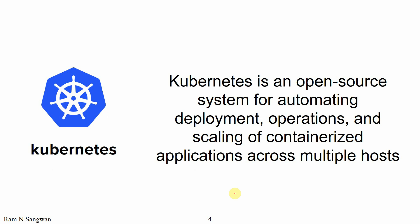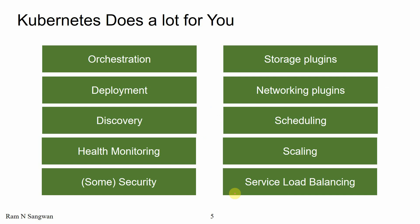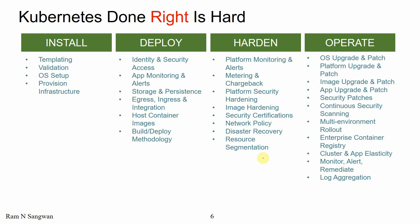Kubernetes is like an engine which automates the process of deployment and operations, including scaling of containerized applications across multiple hosts, which you have learned in the previous nine lectures. Kubernetes does a lot for you: orchestration, deployment, discovery, health monitoring, security, storage plugins, networking plugins, scheduling, scaling, and service load balancing. A lot of core features are available in Kubernetes.